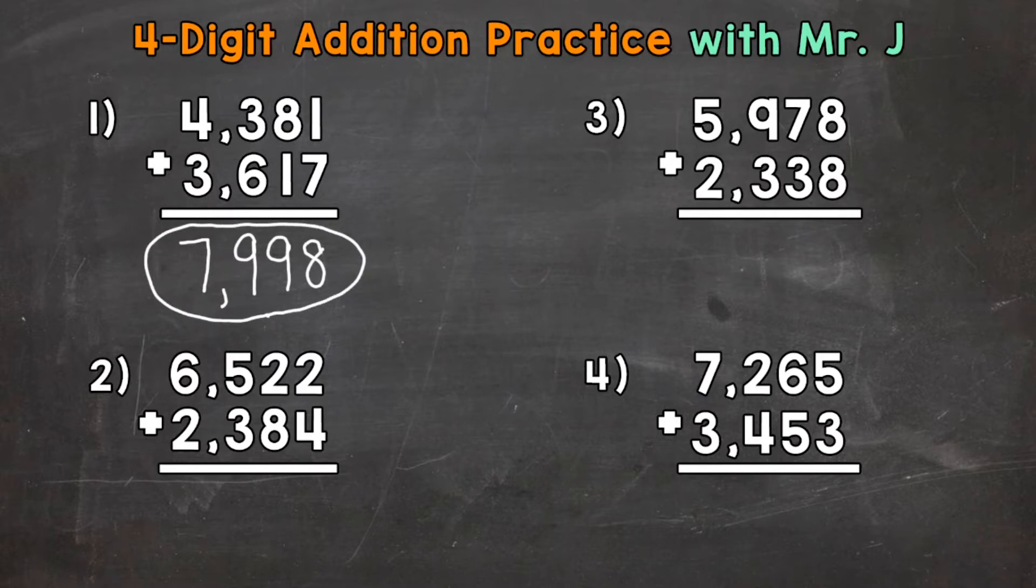Let's move to number 2 where we have 6,522 plus 2,384. Start with the ones. So 2 plus 4 gives us a total of 6. Now for the tens. So 2 plus 8. 2 plus 8 gives us 10. So we put the 0 from 10 in the tens place. And we regroup the 1.